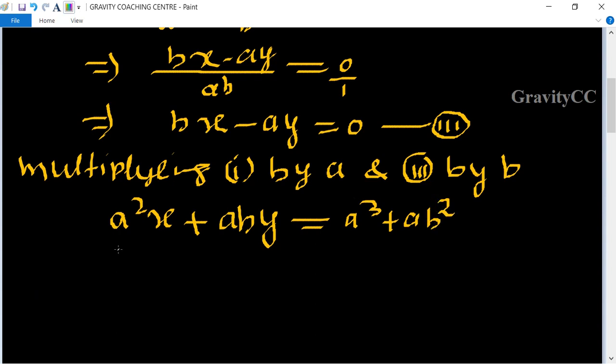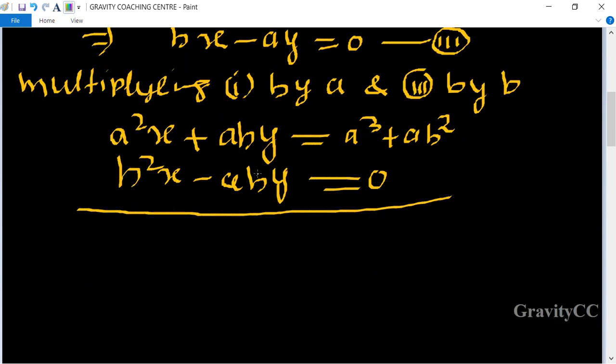Equation three multiplied by b gives b²x - aby = 0. Now adding these equations, a²x + b²x = a³ + ab².